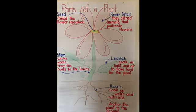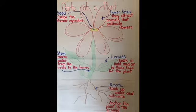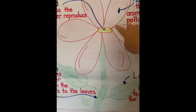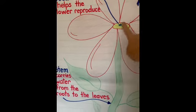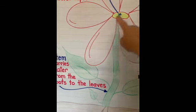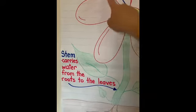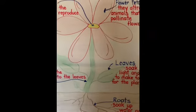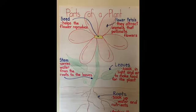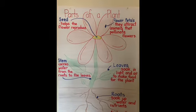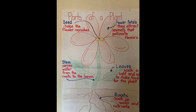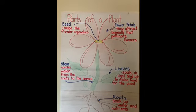At the top we have our flower petals. These right here, these are our flower petals. The petals are bright and beautiful in color and they attract animals that pollinate the flowers.